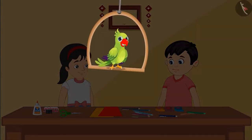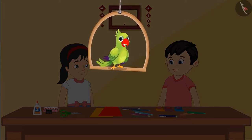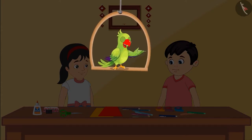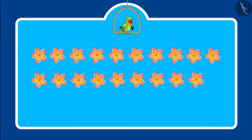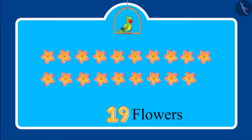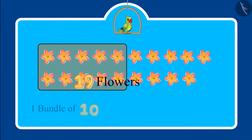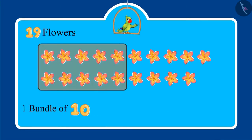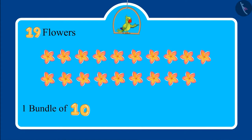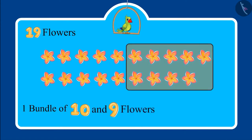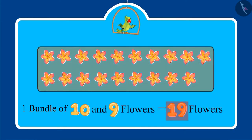So children, now even you can read two-digit numbers correctly like Chotu. Let's look at another example. These are some flowers, and the number of these flowers is written below them. Can you identify and tell me this number? Yes, this is one bundle of ten flowers and nine more flowers. That means in total 19 flowers. Very good, children.